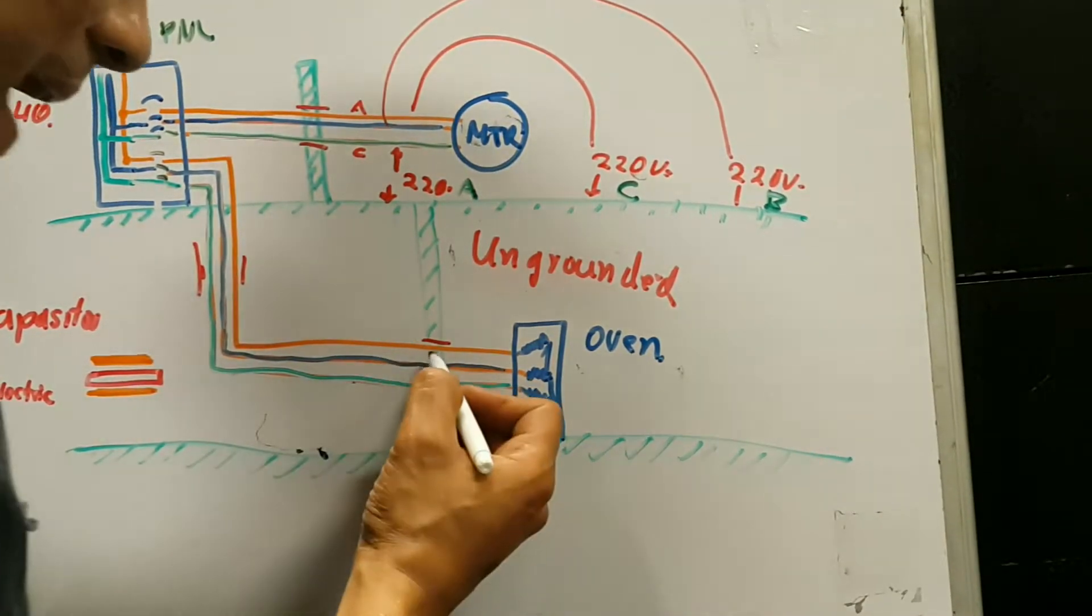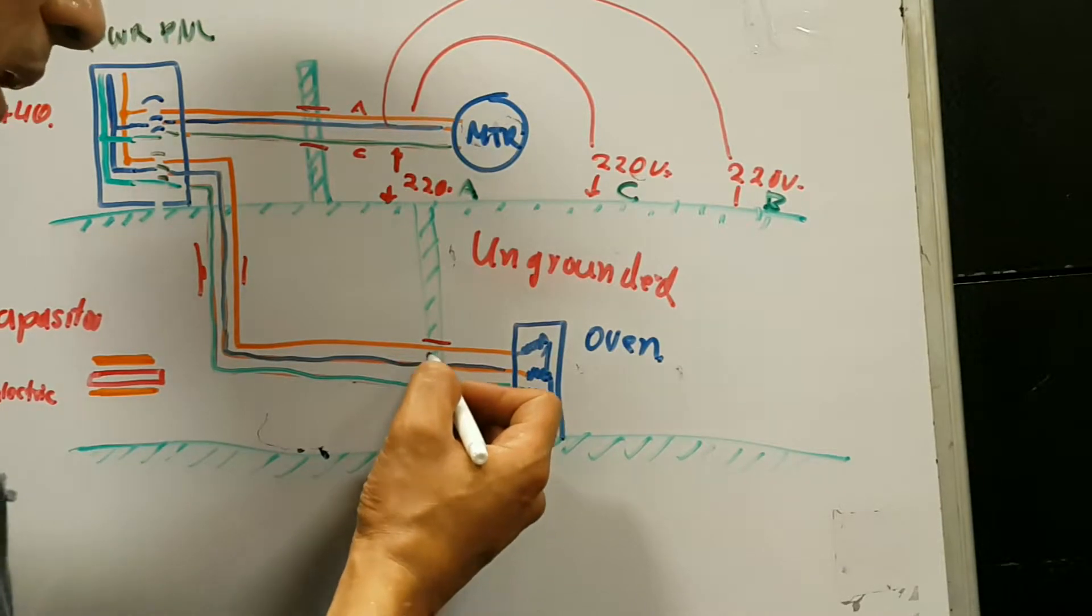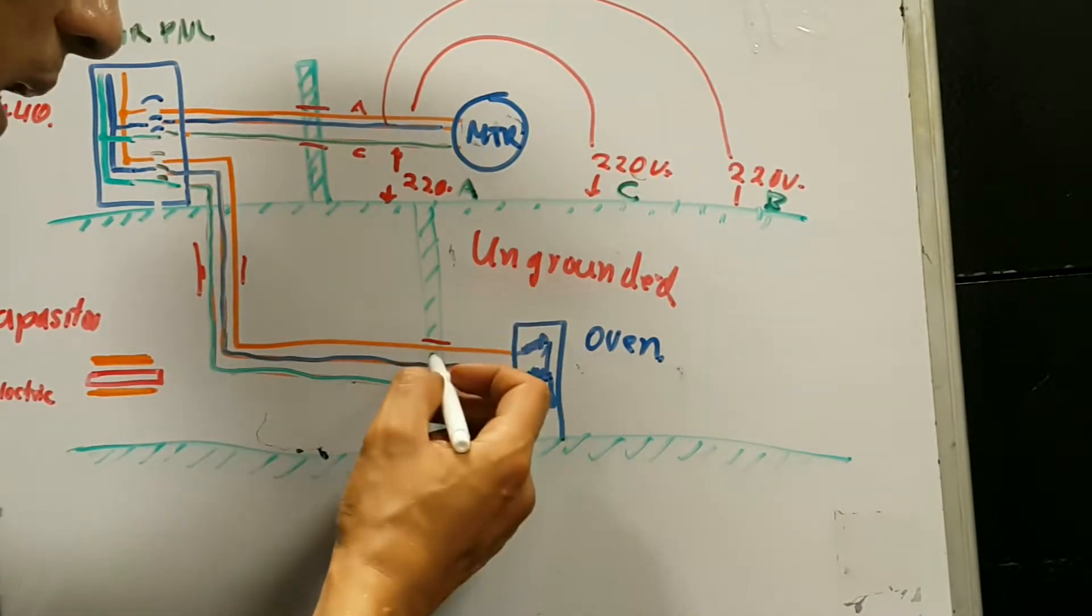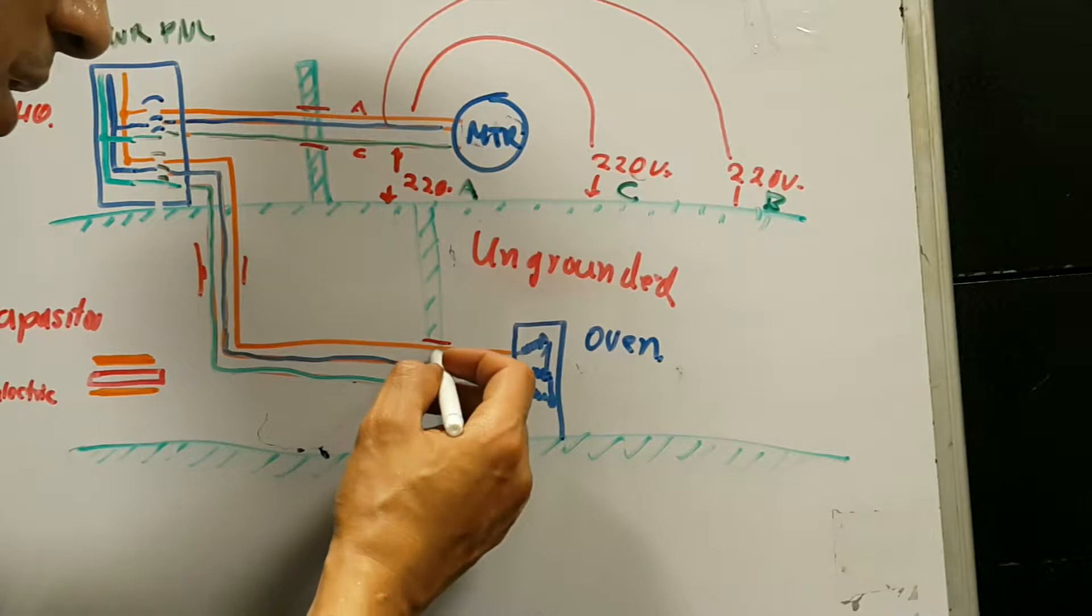Well, as soon as that happens, since the ship is metal, that wall over here, or that bulkhead, will be energized with, in this case, Bravo phase, because that's what we have.